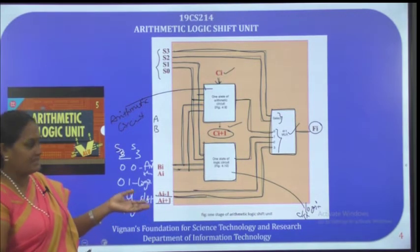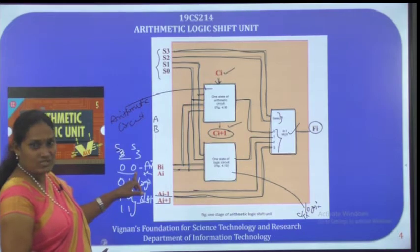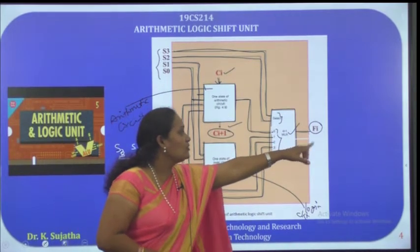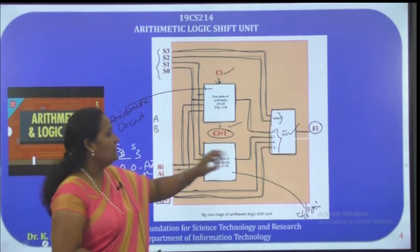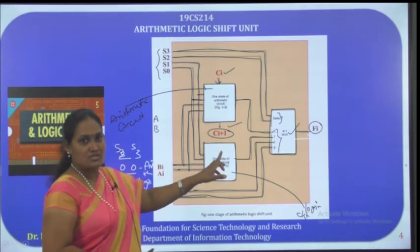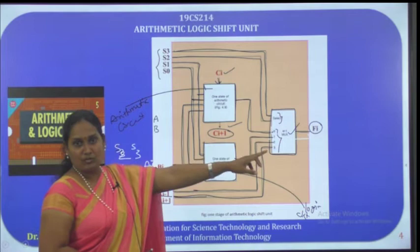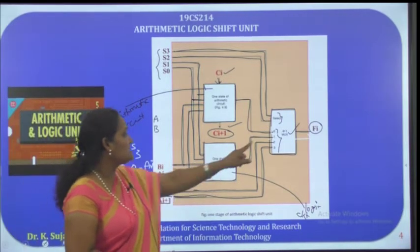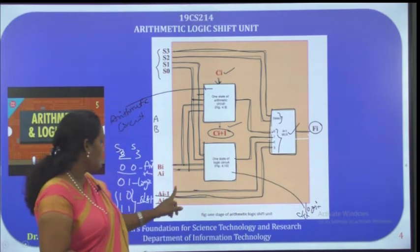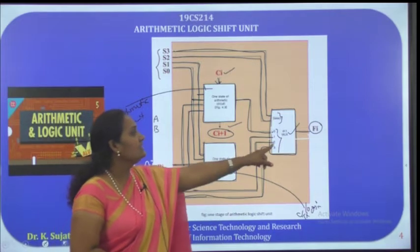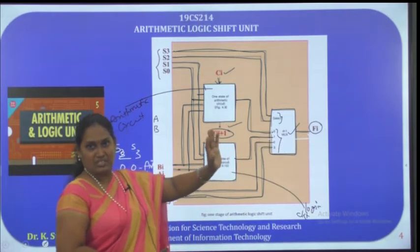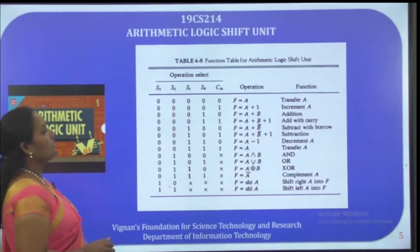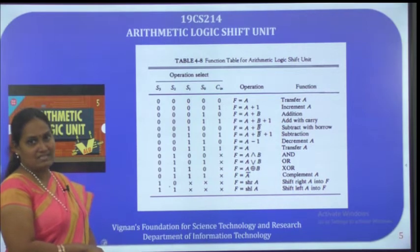Now let us look in detail at what operations are performed by the arithmetic logic shift unit. When S3, S2 are both 0, 0, arithmetic operations are performed — there are 8 such cases in total based on S1, S0, and Cin. If S1, S0 are 0, 0 and Cin is 0, A is passed through the arithmetic circuit and A+0 = A, giving a transfer of A operation.